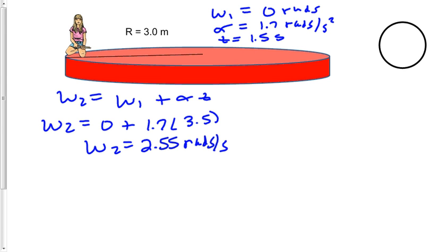Now our goal is to find the total acceleration. So what kind of accelerations do we have? We have a tangential or linear acceleration because we do have an angular acceleration, but we also have some centripetal acceleration because the girl is traveling in a circle.